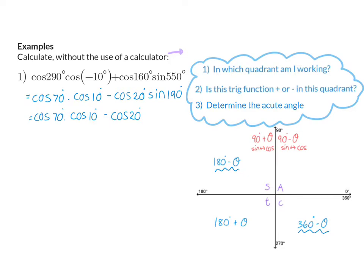And for sin of 190, I once again need to go through my three steps. 190 is in the third quadrant, where only tan is positive, so this becomes negative sin. And now I need to determine the acute angle. So I'll ask myself, 180 plus what will give me this 190, and that will be an acute angle of 10.